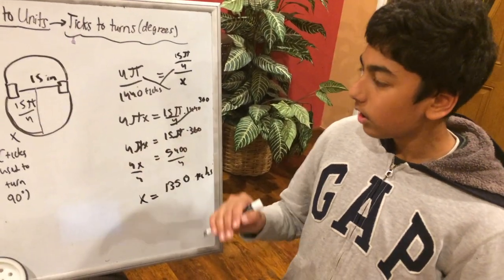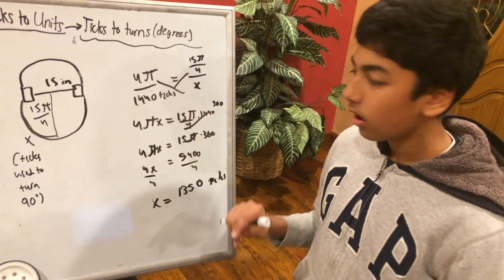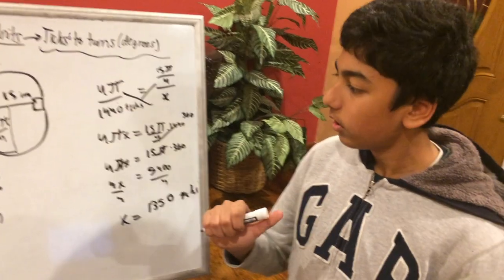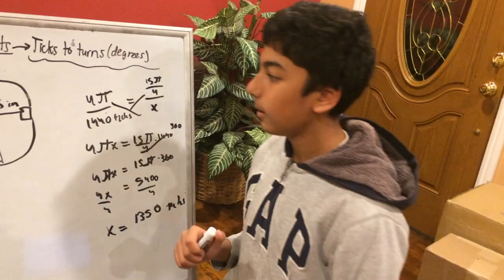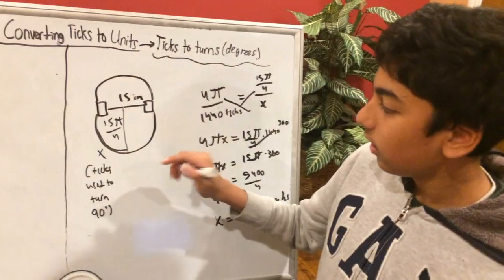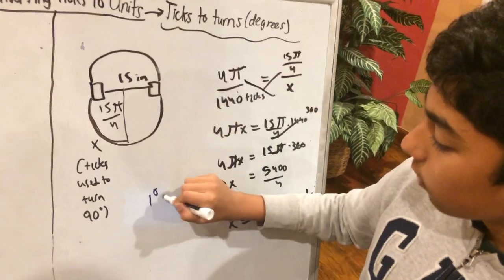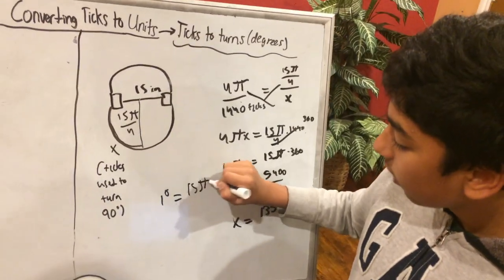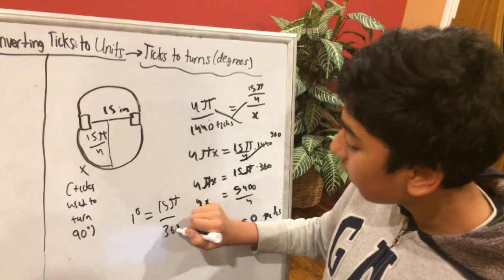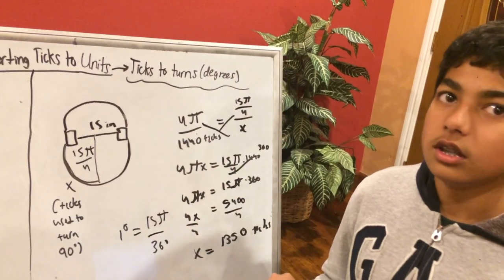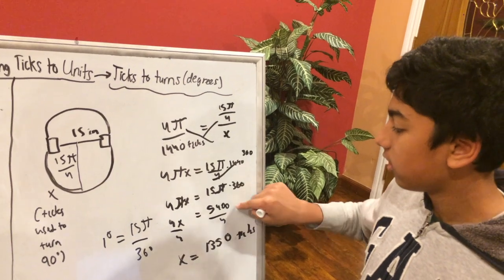So you can actually use this any way you want. Like, if you want to find the amount for one degree, all you would do is 15 pi over 360. If you want to find the amount for 360 degrees, then it's pretty much this number right here.